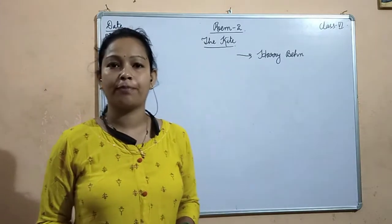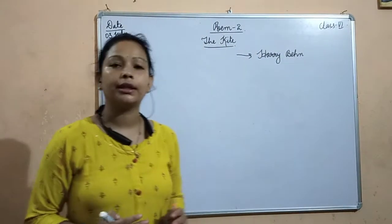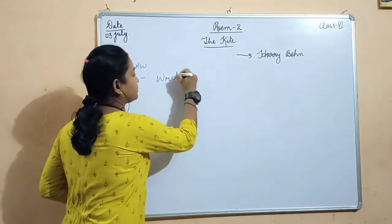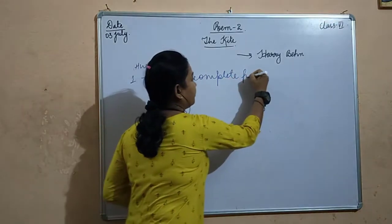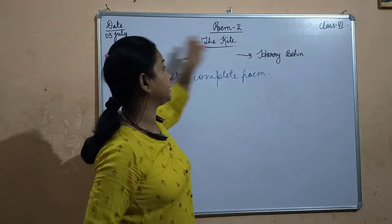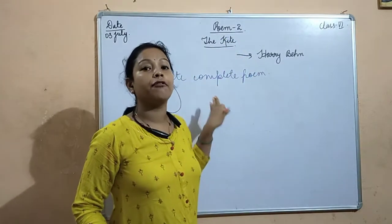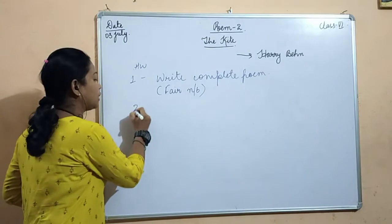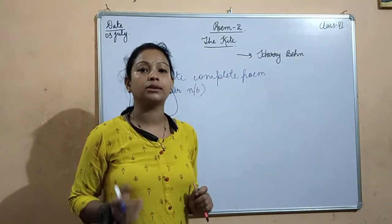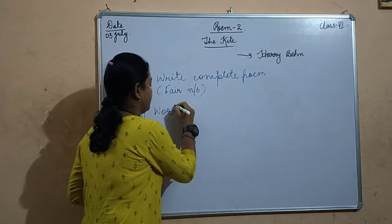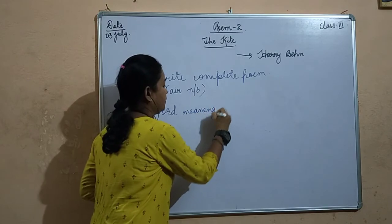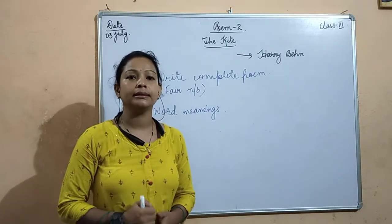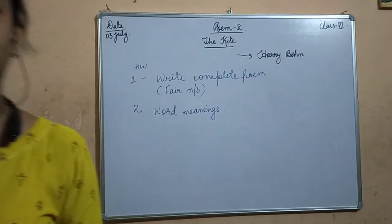So class, this was the explanation of the poem. What you have to do is read the poem again at home. As homework, write the complete poem — after mentioning the date — titled 'The Kite' with the writer's name, in your fair notebook in beautiful handwriting. Second, write down the word meanings which will be provided. Tomorrow we will continue the same topic. Stay safe and stay healthy. Thank you so much.